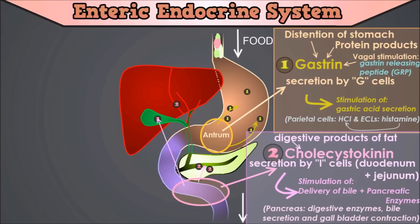Cholecystokinin is also produced by neurons in the enteric nervous system and is widely and abundantly distributed in the brain. The name cholecystokinin has a nice origin — it means to move the bile sac, so the gallbladder. Also, CCK secretion is regulated by a feedback mechanism: digestion and absorption of the very molecules that stimulate cholecystokinin secretion will in turn decrease CCK secretion. An interesting fact: when given high enough doses, gastrin and CCK can produce all the effects of the other.